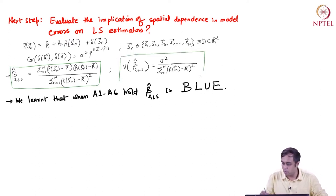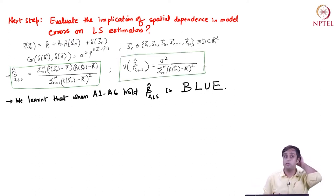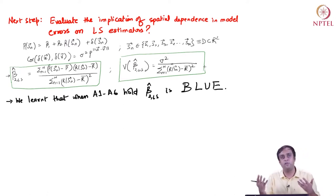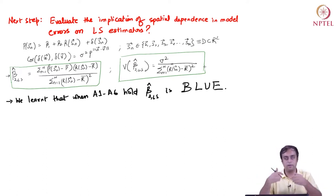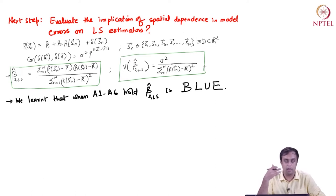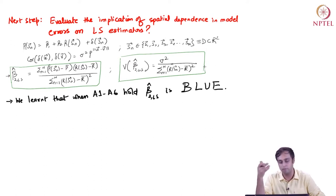We were working on a model of housing prices, modeling those as a function of observed data on the spaciousness of a house at a given location S_n, which we index by the number of rooms. We really want to understand how spacious is this property about which we are trying to understand the pricing. We figured that we will get an estimate of coefficient beta_2 based on the least squares algorithm, which is beta-hat_2_LS, equal to the covariance between P and R divided by the variance of R.